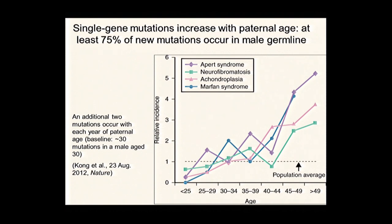Another thing we've learned by sequencing families is that the mutation rate goes up substantially with advanced paternal age. We've known for some time that certain autosomal dominant diseases increase in frequency with the age of the father. By looking at whole genome sequences in families, we estimate there are about two additional mutations each year with each additional year of paternal age after around age 30, as a result of spermatogonia continuing to undergo mitotic divisions throughout the life of the male. At least three-quarters of all new mutations in mammalian species can be attributed to males. So in addition to wreaking a lot of havoc in the world, males also wreak most of the havoc in the genome, at least at the level of single nucleotide variants.